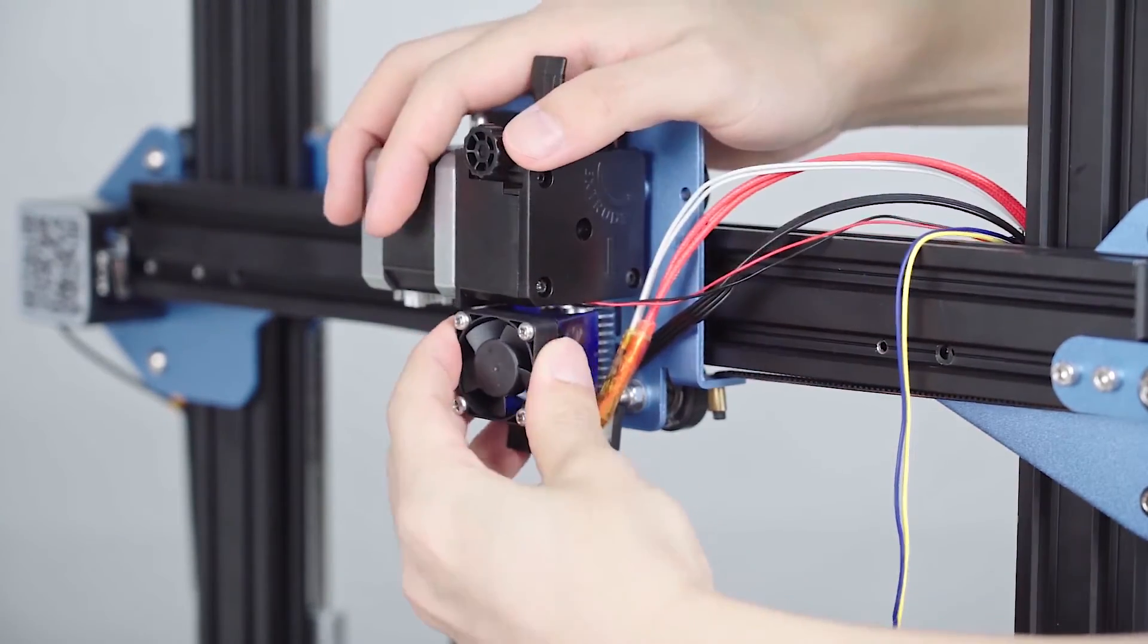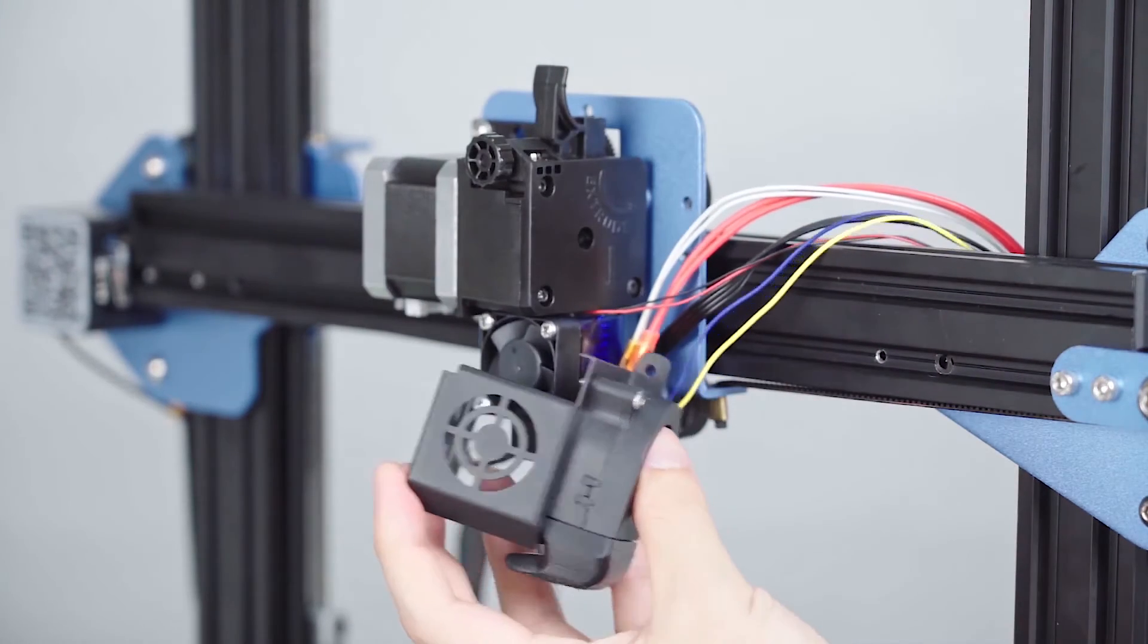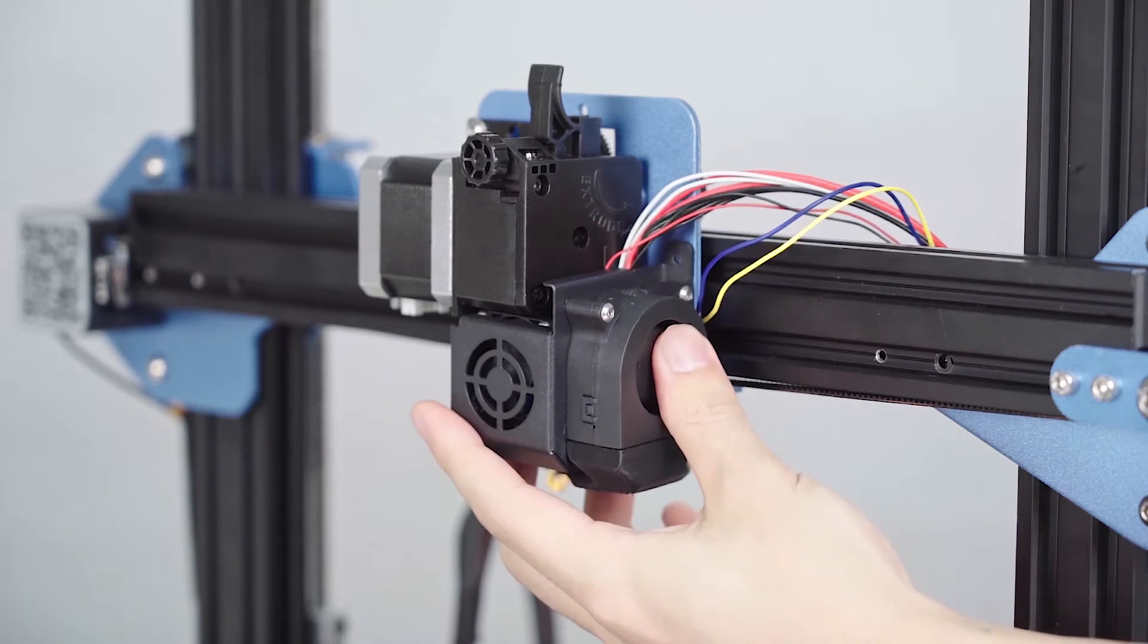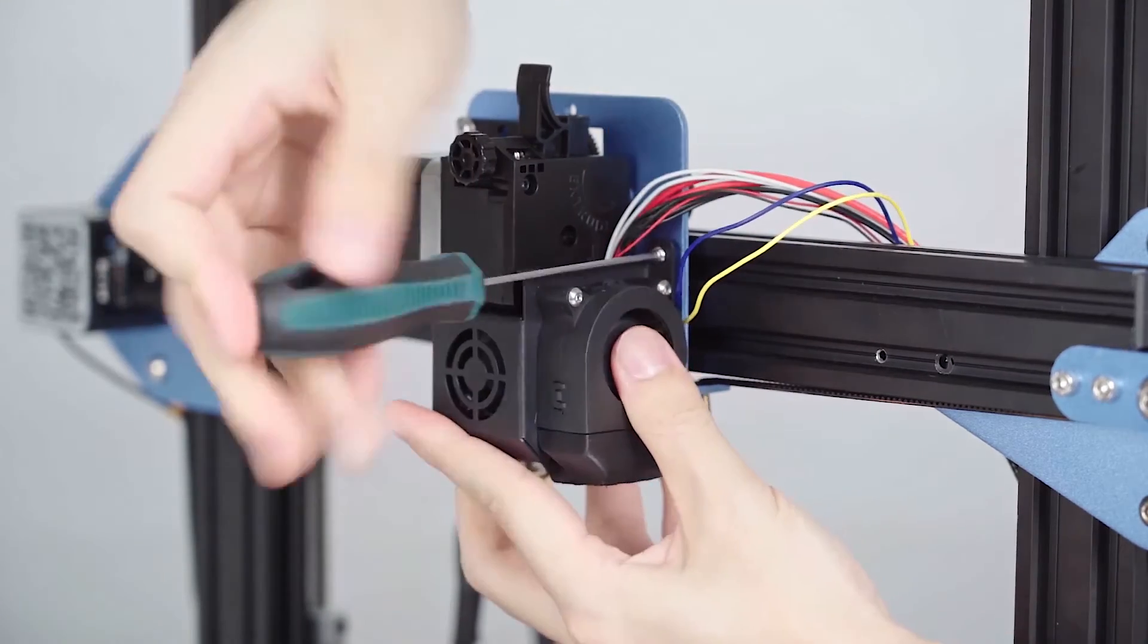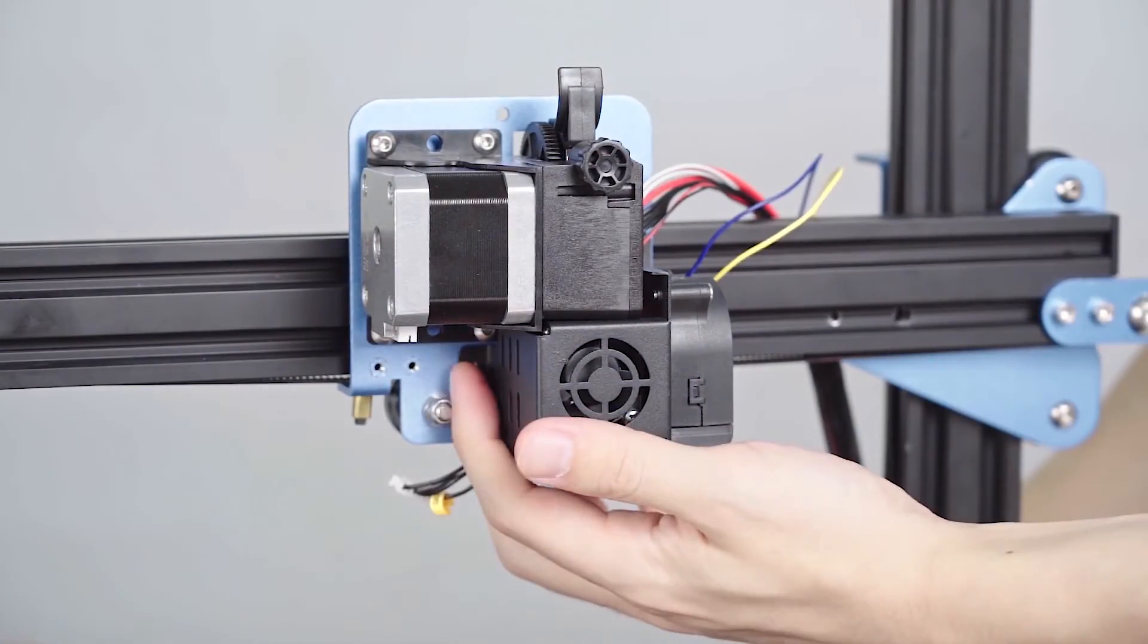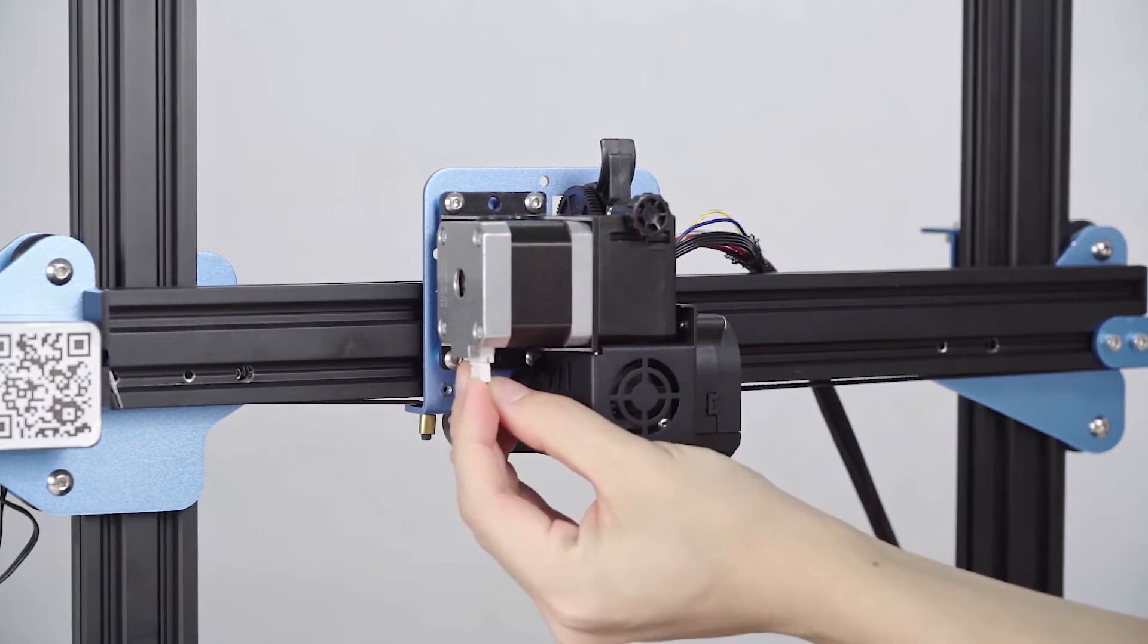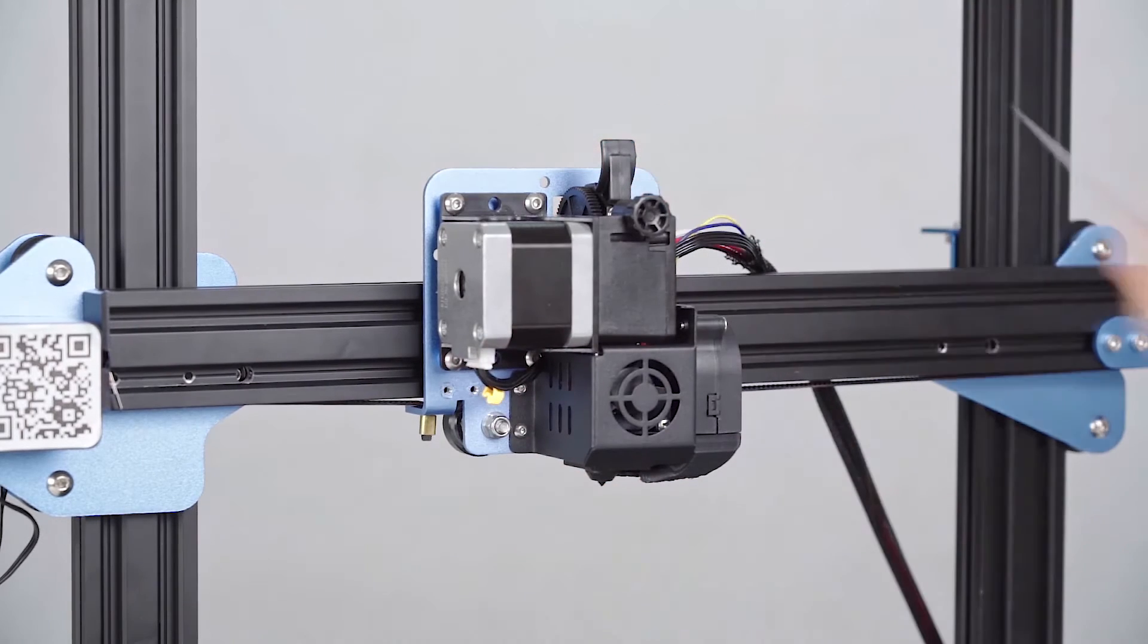Then it's going to connect the nozzle fan with the hot end. And finally, we cover it with the fan drill. Don't forget to screw it and make it tight. Now it has finished tightening all the screws, and finally connect the cable with the fan. Perfect!